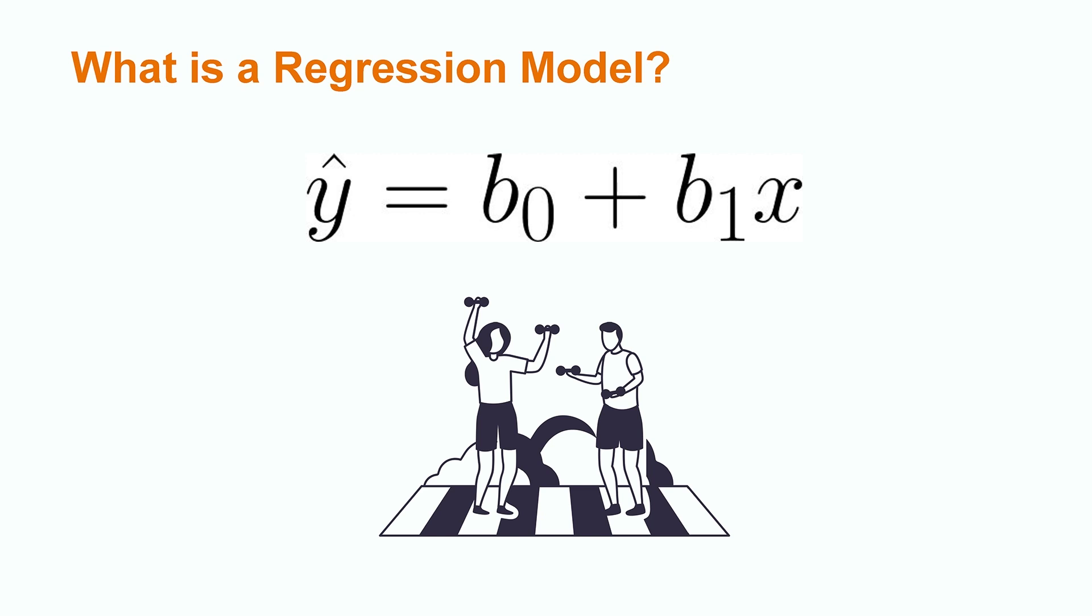Our independent variable, sometimes called the explanatory variable or predictor variable, is our x and our dependent variable, sometimes called the response variable, is our y.